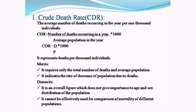The merits of CDR are: it requires only the total number of deaths and average population, considering both male and female population; and it indicates the rate of decrease of population due to deaths. The demerits are: it is an overall figure that does not give importance to age and sex composition, considering all age groups from 0 to 100 and both sexes; and it cannot be effectively used for comparison of mortality across different populations.